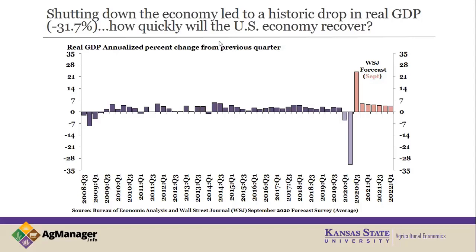Looking forward, one of the interesting things as we get more data is forecasts. The forecasted rebound in Q3 is not as slow as previously expected — roughly a snapback of about 25% based on the Wall Street Journal forecast, compared to earlier expectations of 15-18%. So there's some good news; our economy is starting to come back. Looking further out, settling to about 3% growth, which is actually above previous expansion periods — hopefully these forecasts come to fruition.